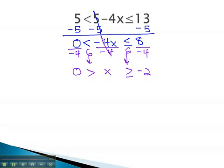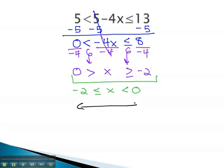To make this inequality more familiar, we might flip the whole thing over, so the inequality symbols open to the left. Negative 2 is less than or equal to x, which is less than 0. This will make it easier to graph.